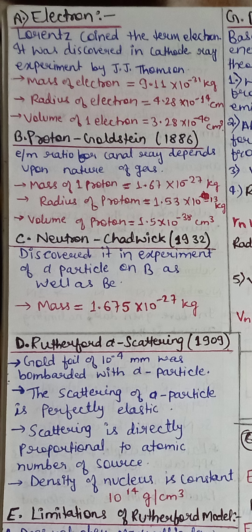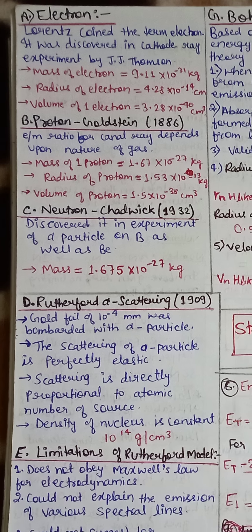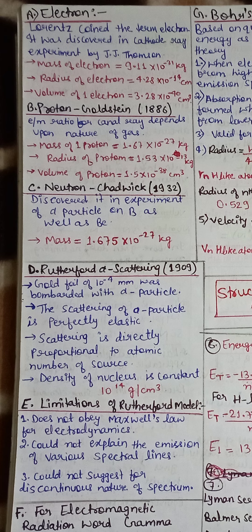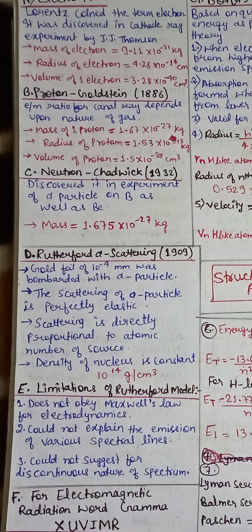Electrons given are mass of electron, radius of electron, volume of one electron and proton, neutron and Rutherford scattering. Limitation of Rutherford models.